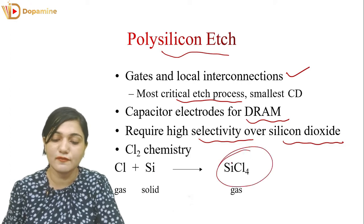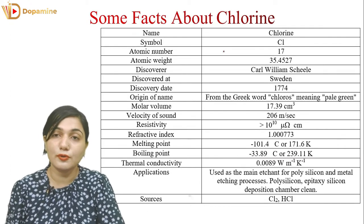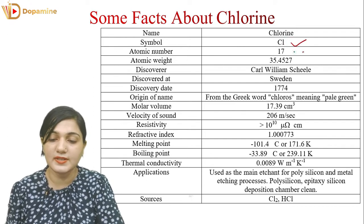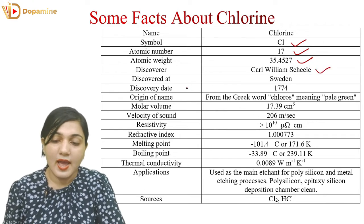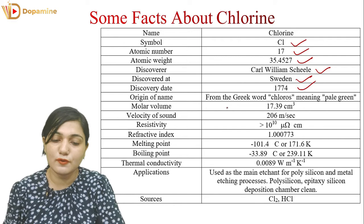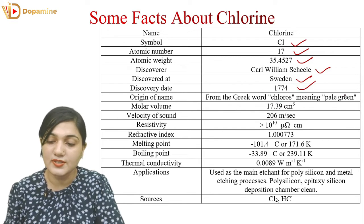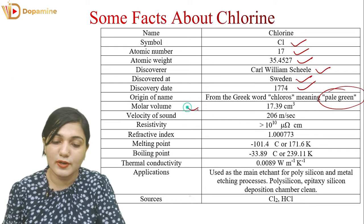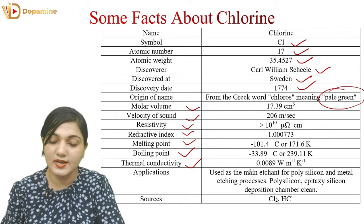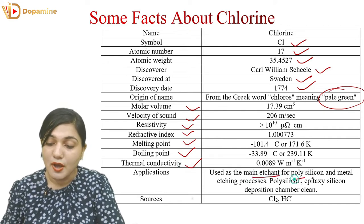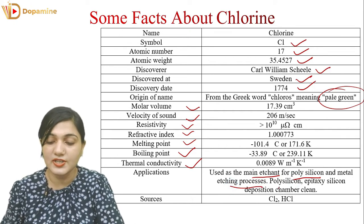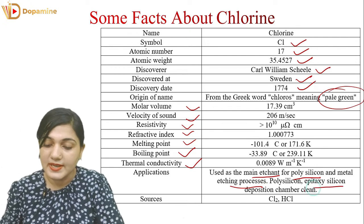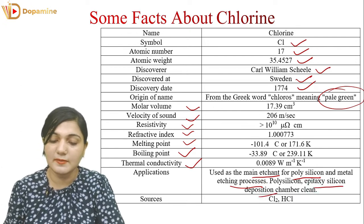The symbol of chlorine is Cl, atomic number 17, atomic weight 35.45. Discoverer Karl William Scheele discovered it in Sweden in 1774. The name came from the Greek word 'Chloros,' which means pale green. Properties include molar volume, velocity of sound, resistivity, refractive index, melting point, boiling point, and thermal conductivity. Chlorine is used as the main etchant for poly-silicon and metal etching processes, and for chamber cleaning. Sources are Cl2 and HCl.